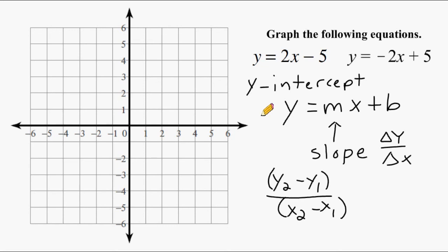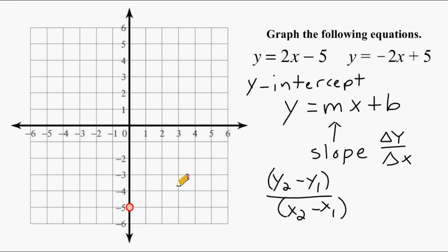The first thing that we should do when graphing an equation in slope-intercept form is to look at the y-intercept, which is all the way at the end of your equation, because we know our line is going to cross the y-axis at that point. So find negative 5 on the y-axis and create a single point — we know for sure that our straight line is going to cross through that point.